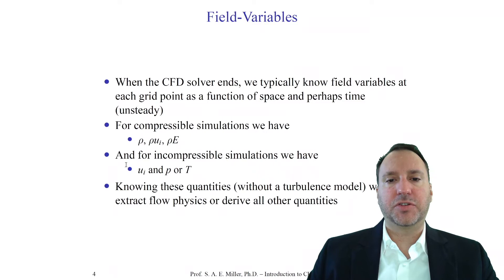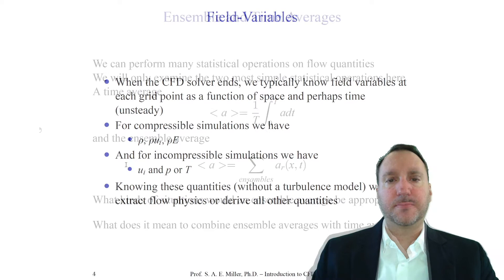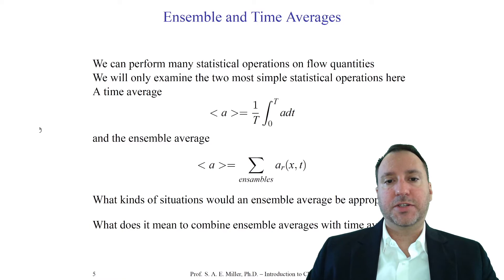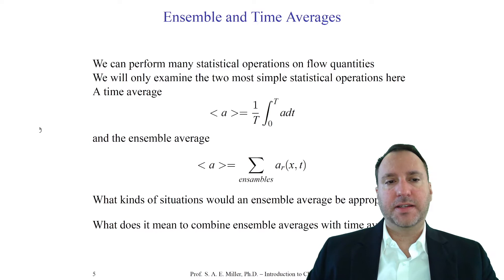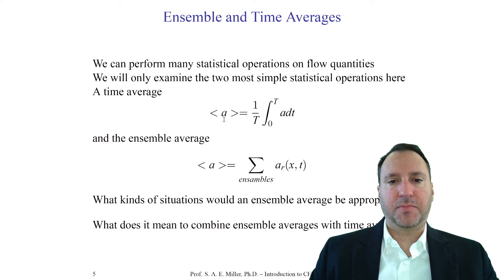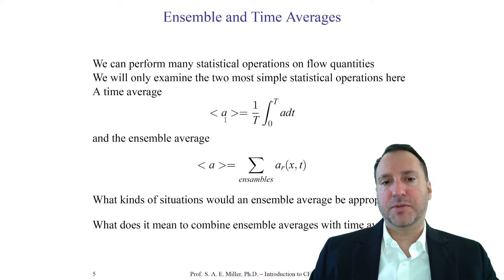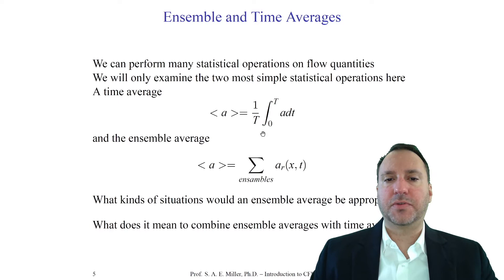From a DNS-type simulation, the most important derived quantities might be average or statistical quantities like ensemble averages. We can perform statistical operations of any type on the flow quantities. The first and most popular is the time average, written as angle brackets around variable a. The time average is the integral from 0 to T of a divided by the total time — it's adding up all values of a through integration and dividing by time.